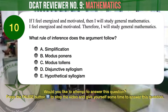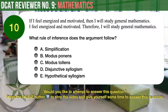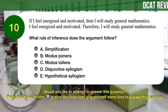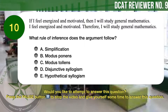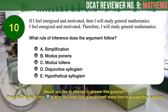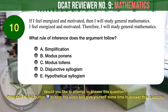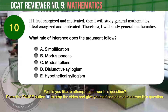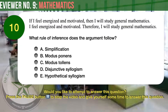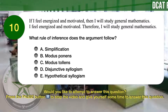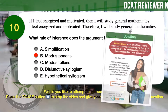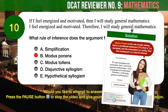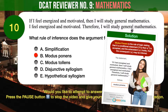Question number 10: If I feel energized and motivated, then I will study General Mathematics. I feel energized and motivated. Therefore, I will study General Mathematics. What rule of inference does the argument follow? The correct answer is B: modus ponens. Modus ponens states that if a conditional statement — if P then Q — is accepted, and the antecedent P holds, then the consequent Q may be inferred.